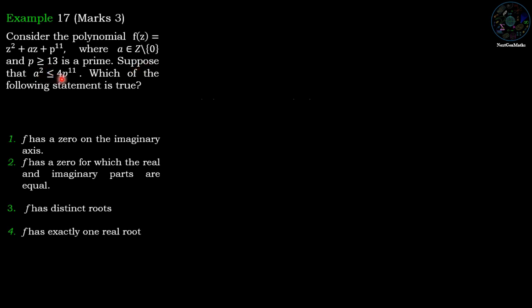Suppose a² = 4·p¹¹. Which of the following statements is true? Option 1: f has a zero on the imaginary axis. Option 2: f has a zero for which the real and imaginary parts are equal. Option 3: f has distinct roots. Option 4: f has exactly one real root.